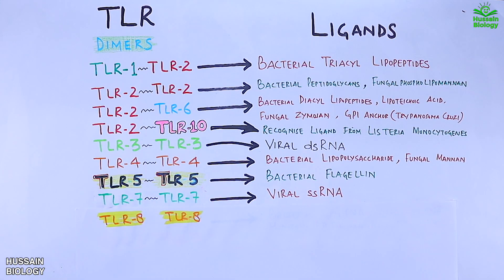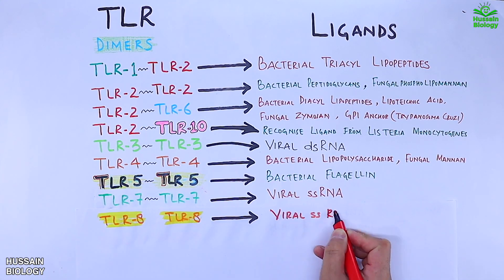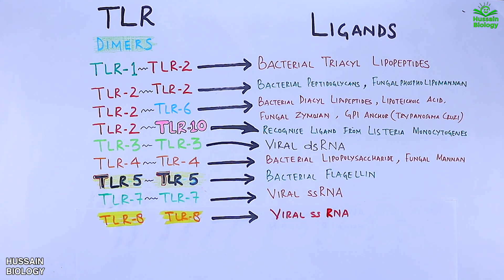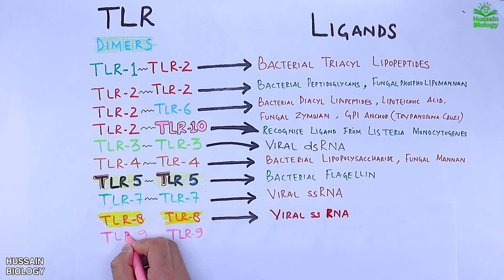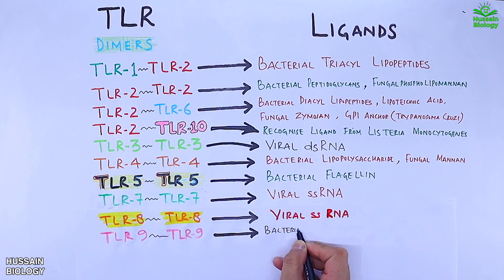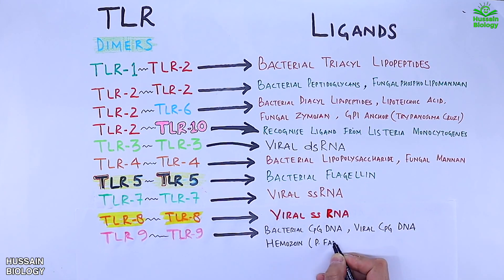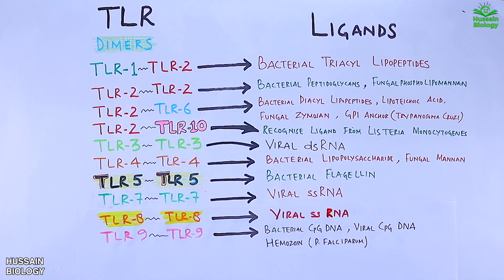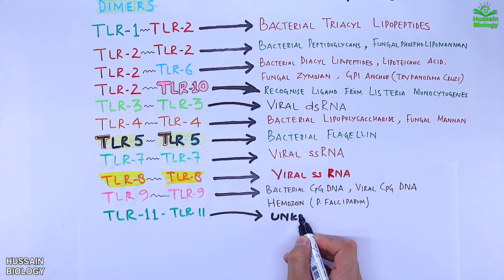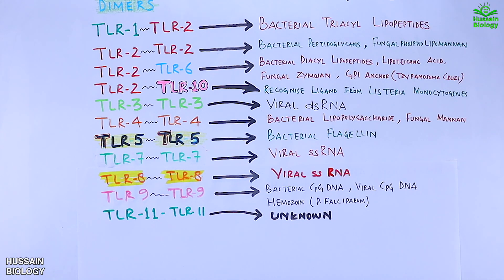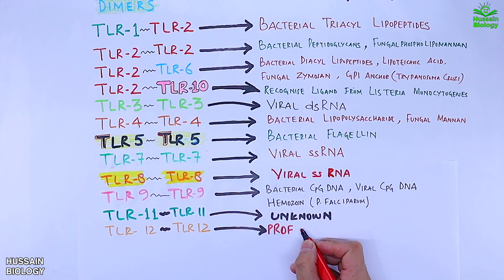The TLR8/TLR8 homodimer also recognizes viral single-stranded RNA. The TLR9/TLR9 homodimer recognizes bacterial CpG DNA, viral CpG DNA, and hemozoin from Plasmodium falciparum. The TLR11 homodimer's ligand is still unknown. The TLR12 homodimer recognizes the profilin molecule from Toxoplasma gondii.